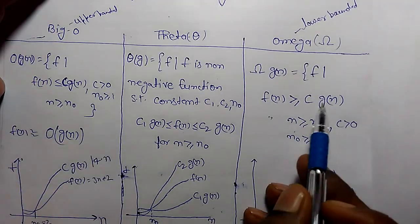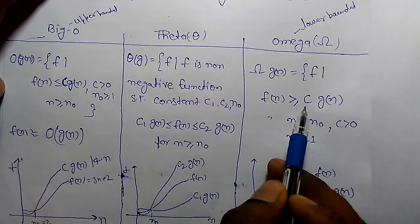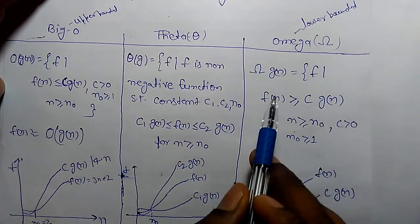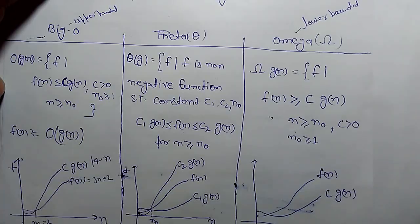This is your assumption. You have to find C. You have to assume G of N for that F of N should be greater than equal to C of G of N.